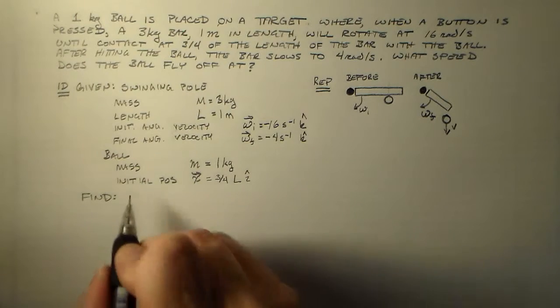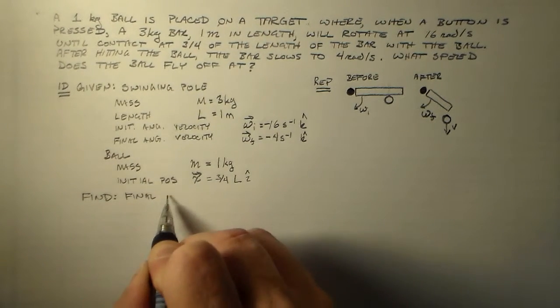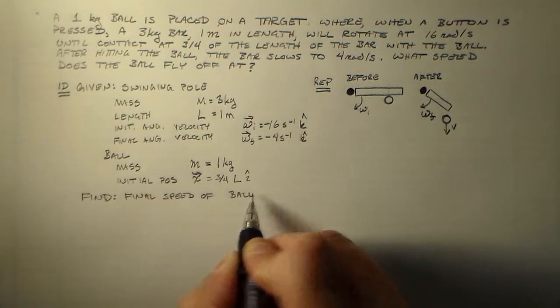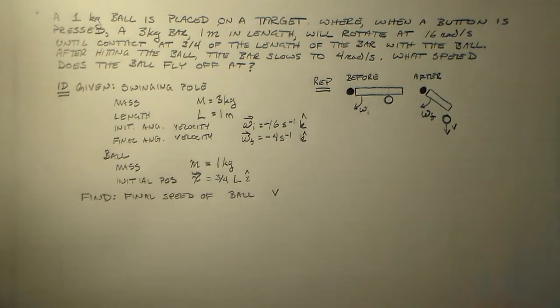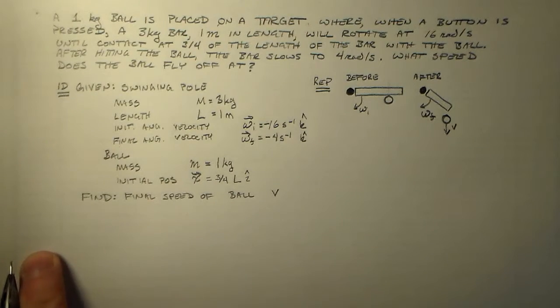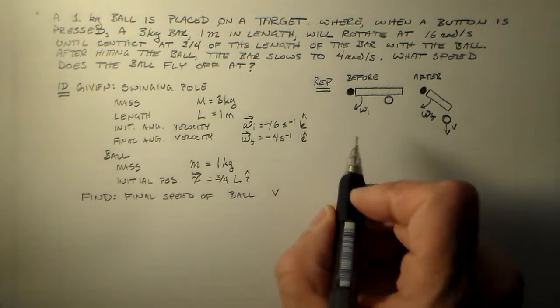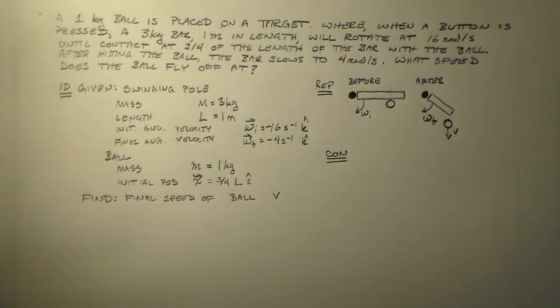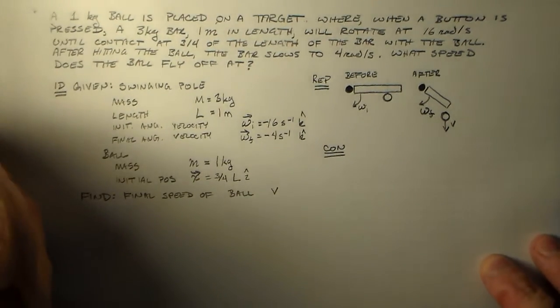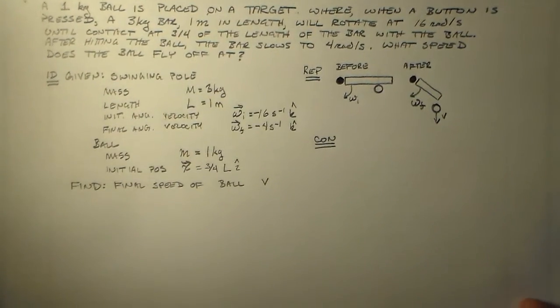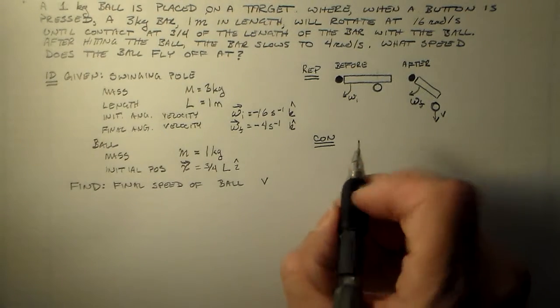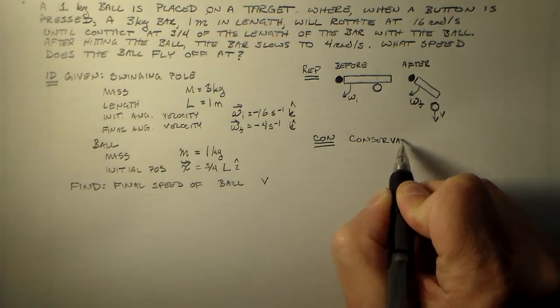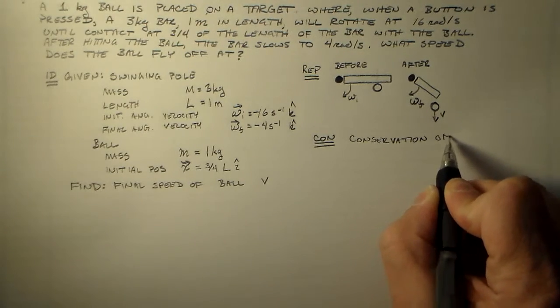That vector is three quarters of the way from here to here. From here to here, really. And so that is three quarters of the length of the thing. I'm perfectly happy to do that. And that's in the x direction. So the x direction is i-hat. And we need to know what we want to find. We want to know the final speed of the ball. We'll call that v.